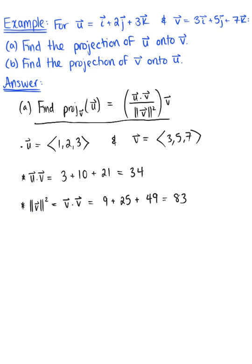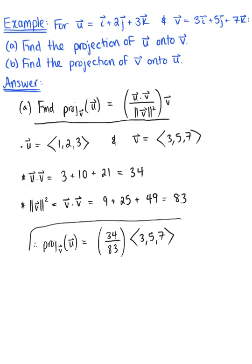Putting this all together, the projection of vector u onto vector v equals the dot product of u and v, which is 34, divided by the magnitude of vector v squared, which is 83, multiplied by vector v ⟨3, 5, 7⟩. Since 34 and 83 share no common factors, this is our final answer: (34/83)⟨3, 5, 7⟩. You could distribute the scalar through each component, but this form is perfect.